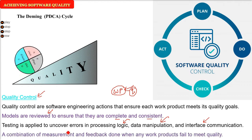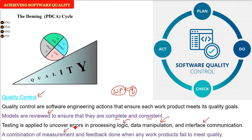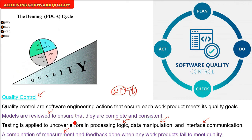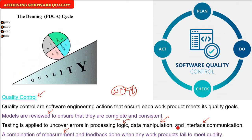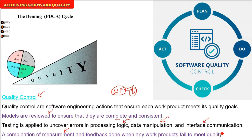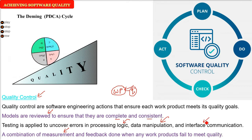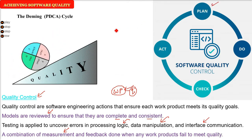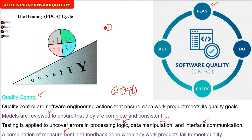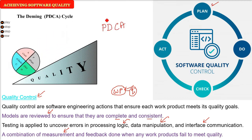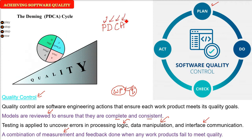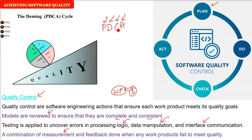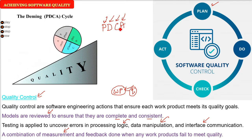The combination of measurement and feedback is applied. When any work product fails to meet quality, just do it again. Plan, Do, Check, Act — PDCA. This is the Deming PDCA cycle. This is how we achieve software quality through quality control.